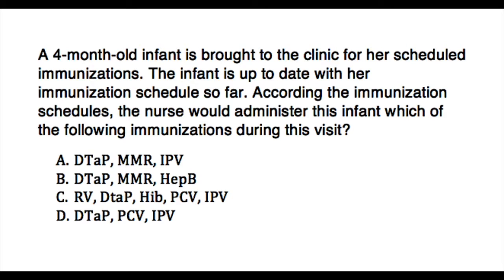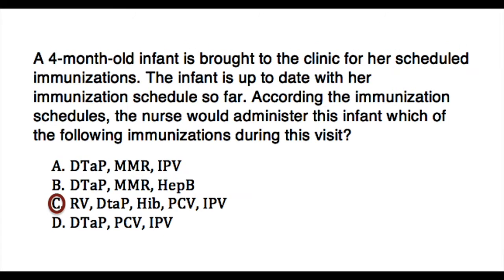The correct answer is C. According to the immunization schedules, the four-month-old infant is scheduled for RV, DTAP, HIB, PCV, and IPV immunizations.